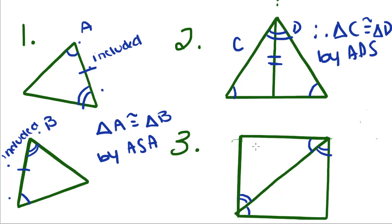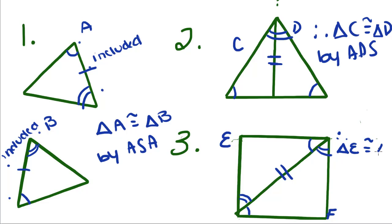Now we have one more. This angle is congruent to this angle, this angle is congruent to this angle, and they share this side. Since this side falls between the two congruent angles, we're going to use angle-side-angle. We can say that triangle E is congruent to triangle F by angle-side-angle.